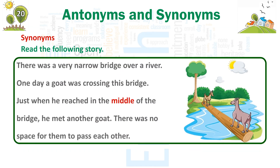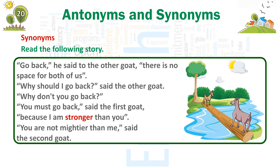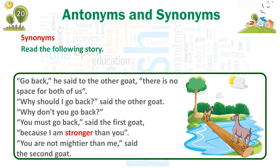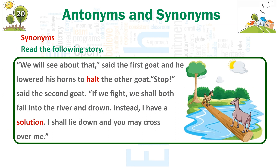Synonyms. Read the following story. There was a very narrow bridge over a river. One day, a goat was crossing this bridge. Just when he reached the middle of the bridge, he met another goat. There was no space for them to pass each other. 'Go back,' he said to the other goat. 'There is no space for both of us.' 'Why should I go back?' said the other goat. 'Why don't you go back?' 'You must go back,' said the first goat, 'because I am stronger than you.' 'You are not mightier than me,' said the second goat. 'We will see about that,' said the first goat, and he lowered his horns to halt the other goat.